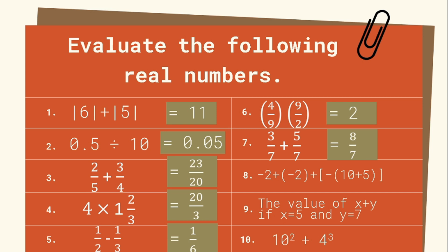Number 8: negative 2 plus negative 2 plus the quantity of negative times the sum of 10 and 5 is equal to negative 19. Number 9: the value of x plus y if x is equal to 5 and y is equal to 7 is equal to 12. Number 10: 10 squared plus 4 raised to 3 is 164.